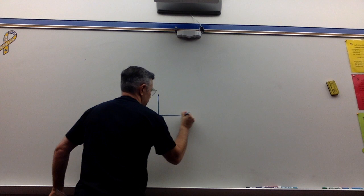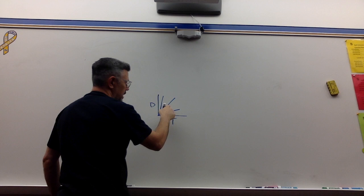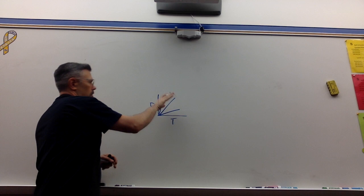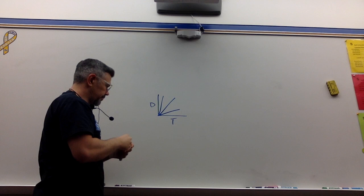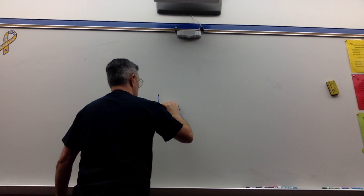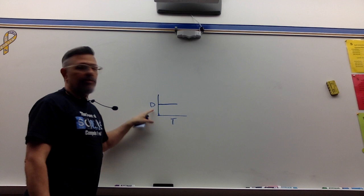Distance-time graph. We have distance on one axis and time on the other. Remember there are three different constant speeds: slower constant speed, average, and super-duper fast. The greater the angle upward on a straight line on a distance-time graph, the faster the constant speed. A flat line on a distance-time graph means the distance is not changing — the distance is staying the same — so we would call this at rest.